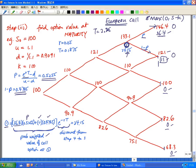E to the power minus RT. So here, e minus 0.05, that's my risk-free rate, times T of 0.1875. So I'm discounting the value of these two probability-weighted amounts back to that time period.